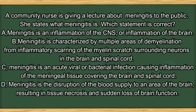Question number 1. A community nurse is giving a lecture about meningitis to the public. She states what meningitis is. Which statement is correct? A. Meningitis is an inflammation of the central nervous system or inflammation of the brain. B. Meningitis is characterized by multiple areas of demyelination from inflammatory scarring of the myelin sheath surrounding neurons in the brain and spinal cord. C. Meningitis is an acute viral or bacterial infection causing inflammation of the meningeal tissue covering the brain and spinal cord. D. Meningitis is the disruption of the blood supply to an area of the brain resulting in tissue necrosis and sudden loss of brain function.